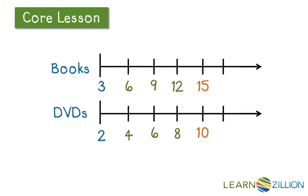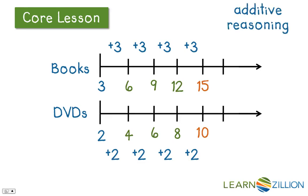Let's look at this double number line all filled out again so that we can review a key idea of ratios. You may have noticed that along each line, we were increasing by 3 each time, and along the DVDs, we were increasing by 2 each time. So this pattern is considered additive reasoning because the books and the DVDs are increasing at a constant additive rate.